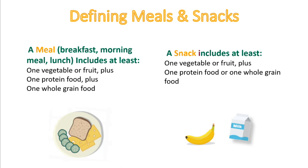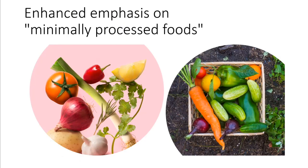The 2020 guidelines place a greater emphasis on serving minimally processed foods versus highly processed foods — minimally processed meaning they haven't been altered much from their natural state. During COVID we relied more on packaged foods, but those restrictions are no longer in place. Examples of minimally processed foods include milk, eggs, vegetables and fruit (fresh or frozen), whole grains like oatmeal, and lean proteins like meats, fish, and beans. These foods naturally have less added sodium, sugar, and saturated fat.